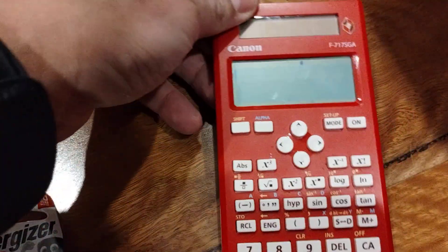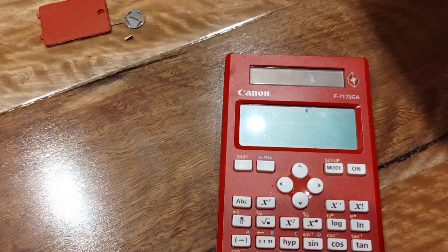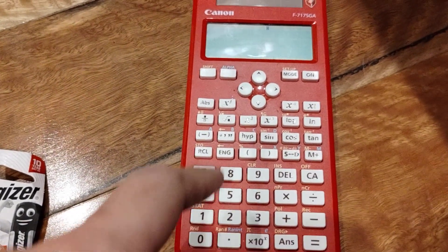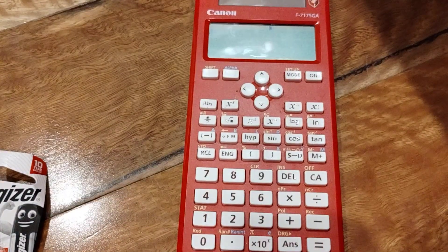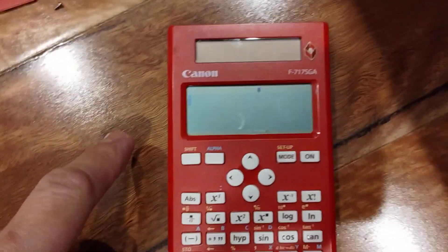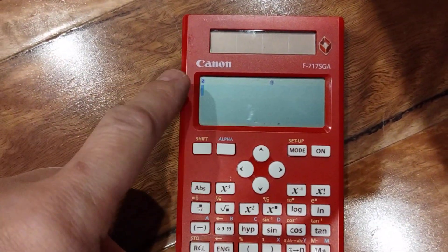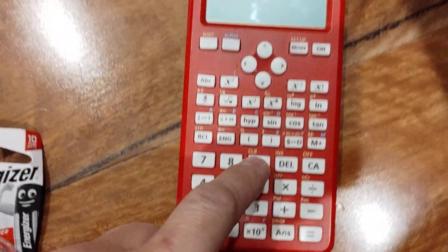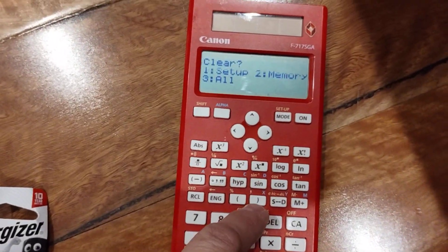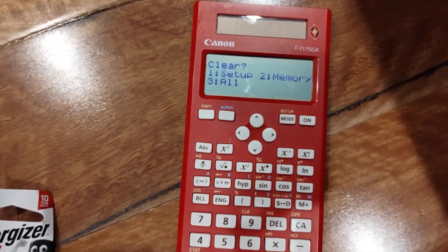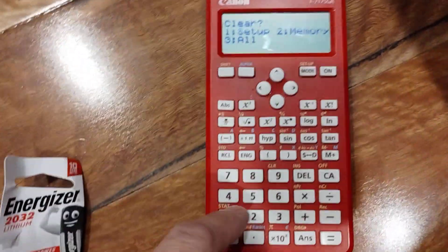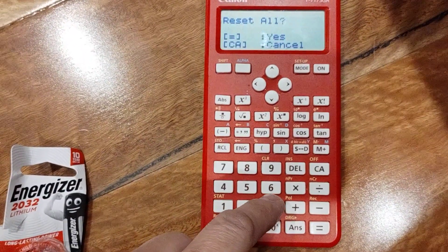Now let's reset it. You need to go to the screen and press shift. Go to CL number nine where it says clear, then press three to reset everything.